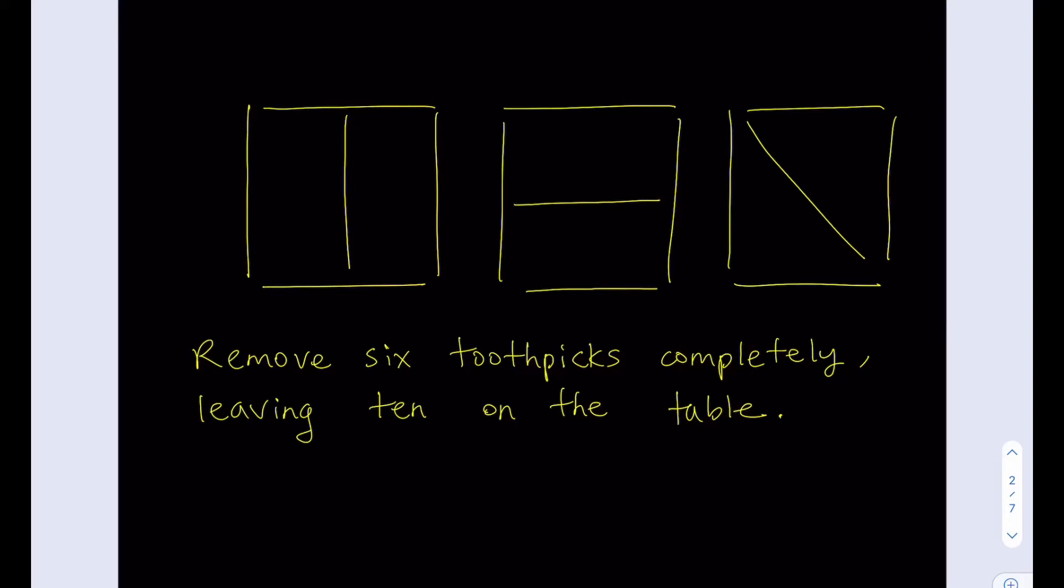So if you remove six of them, you have to leave ten on the table. If you write it as an equation, it looks like we have to find something like 15 minus 6, and that needs to equal 10. Is that possible?